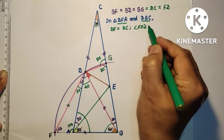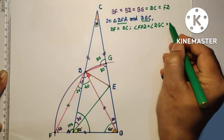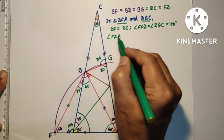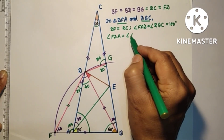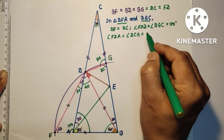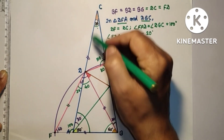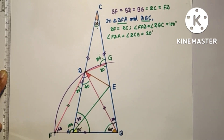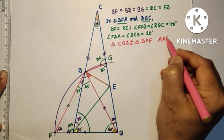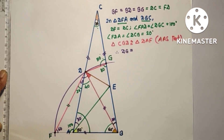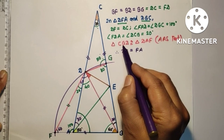In triangles DFA and DGC: FD equals CD because triangle DFB is equilateral, so DF equals FB equals BD equals DC equals BG, all equal. Therefore DF equals DC. Angle FAD equals angle DGC, each being 100 degrees. Angle FDA equals angle DCG, each equal to 20 degrees. So by AAS test, triangle DGC is congruent to triangle DAF. Therefore DG equals FA as corresponding sides of congruent triangles.